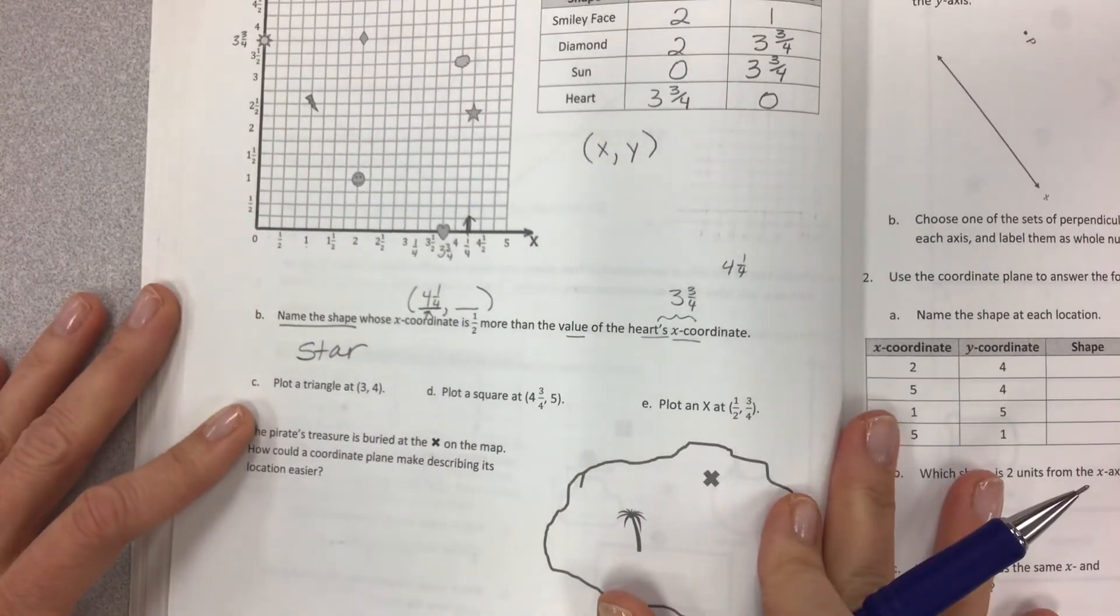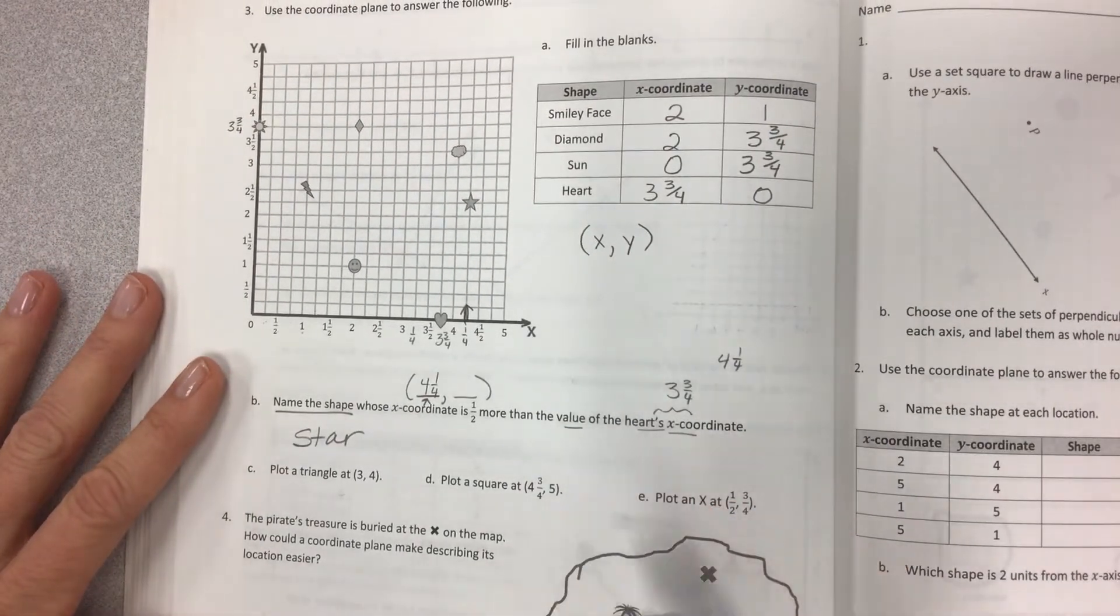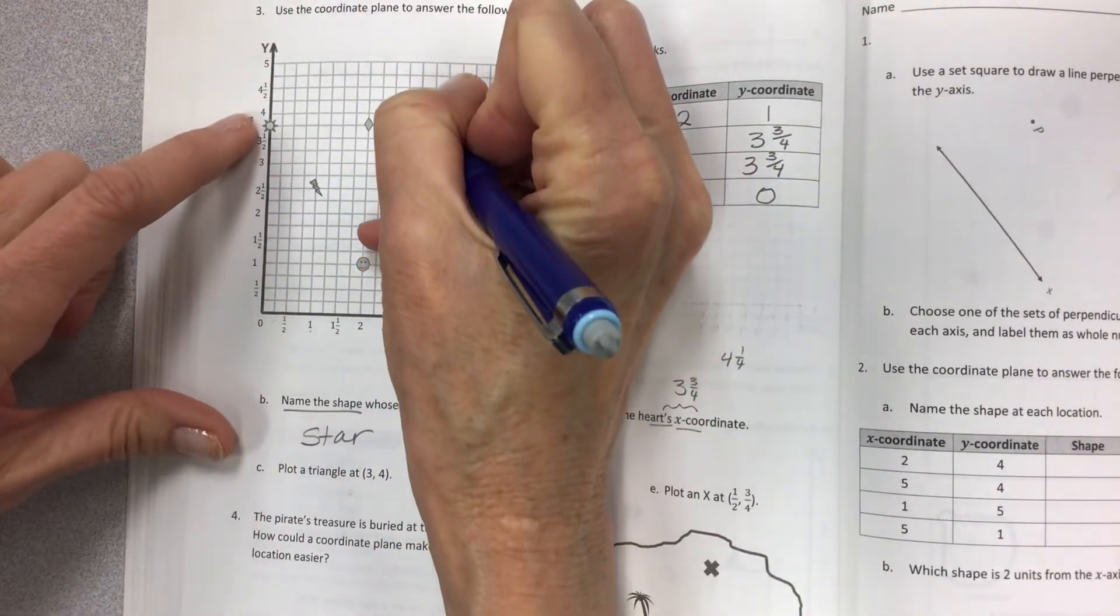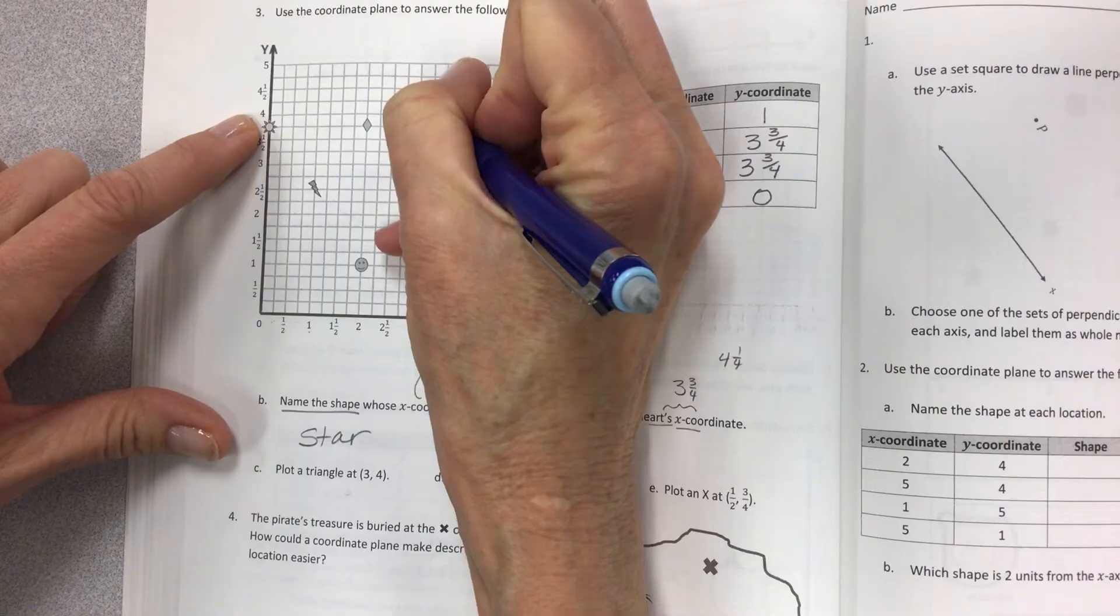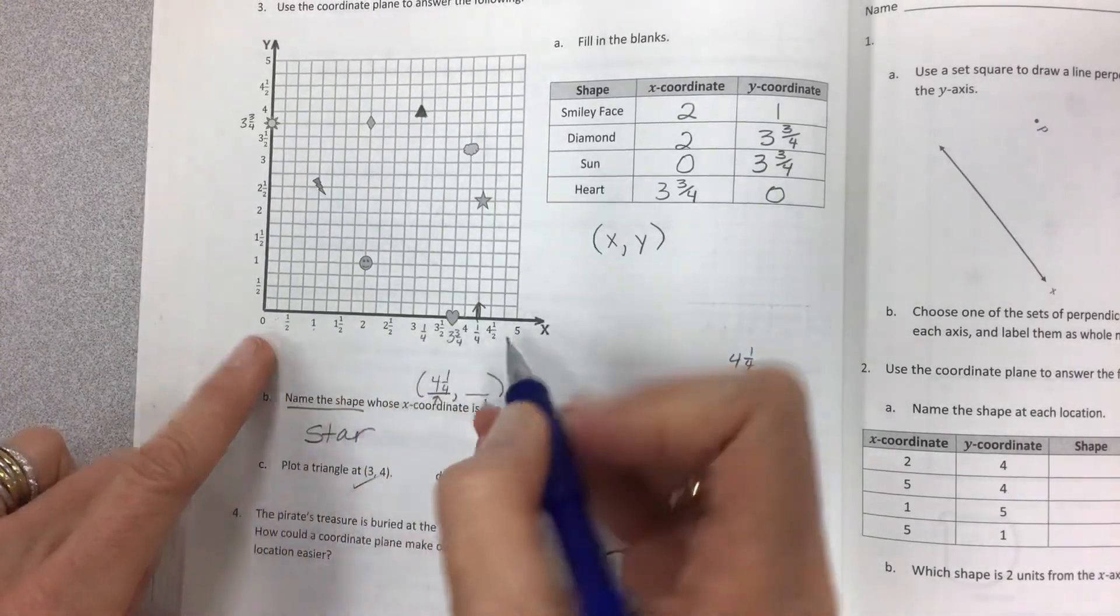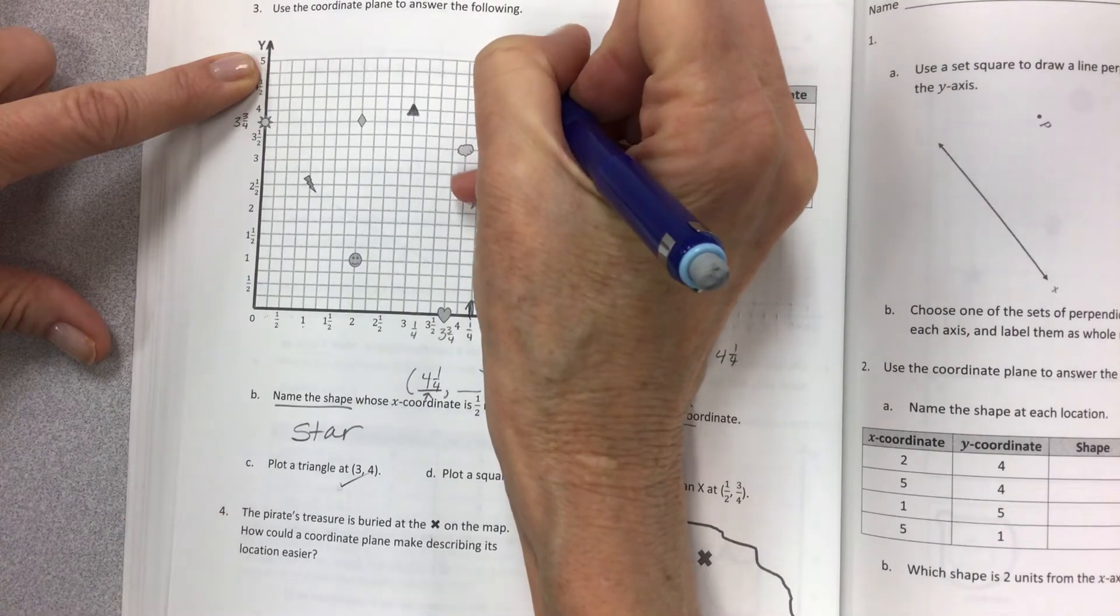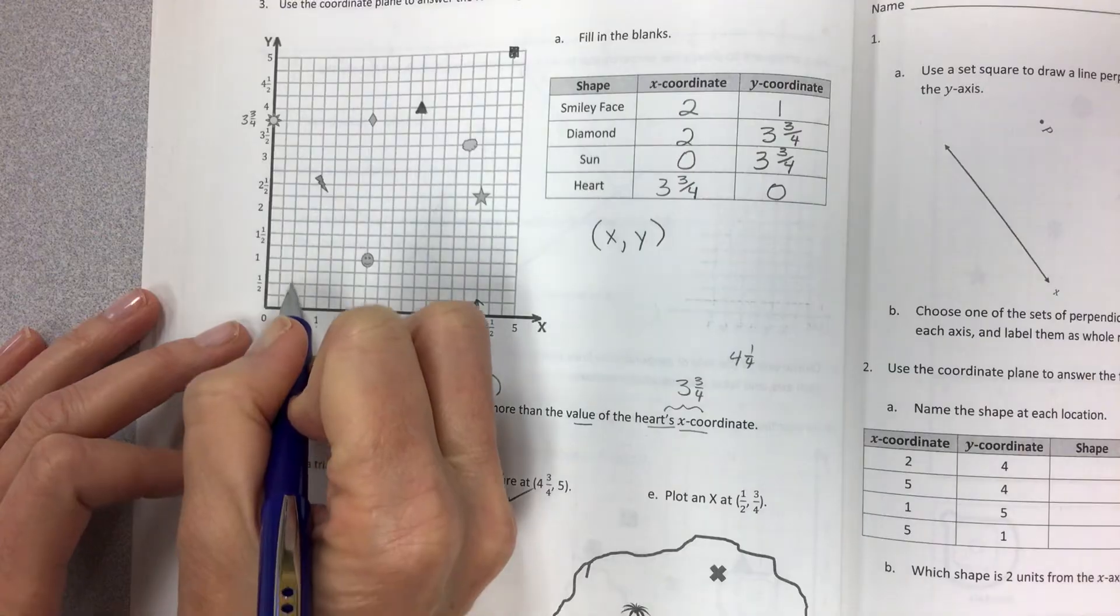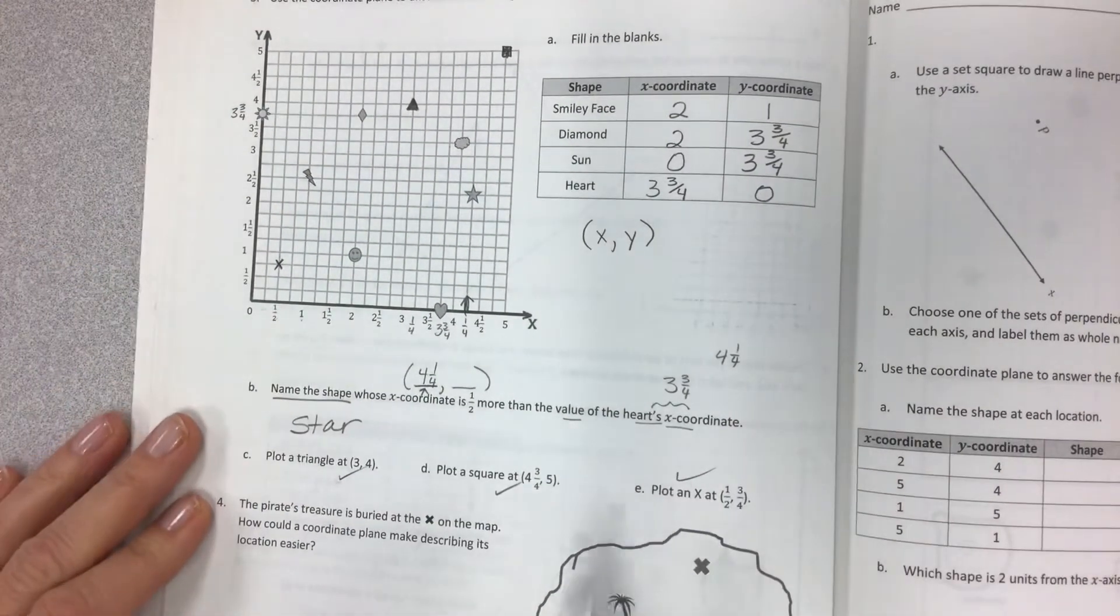And moving on. Now you get to put figures on this graph. So plot a triangle at three, four. So this is kind of a check. And then if I looked at your graph, I would say, oh, I know if they understand it or not, because the triangle will be in the wrong spot. So three, four would be drive before you hike all the way up. Check this. Check it again. You can always put a little dot and run your pencil lead over and check. And we need to put a triangle. Done. Plot a square at four and three fourths, five. Four and three fourths is way out here. And then five for y. That's all the way up here. Just as best you can. It doesn't have to be perfect. Plot an x at one half and three fourths. One half and then three fourths. Not even a full one whole of anything. Plot an x. Good.